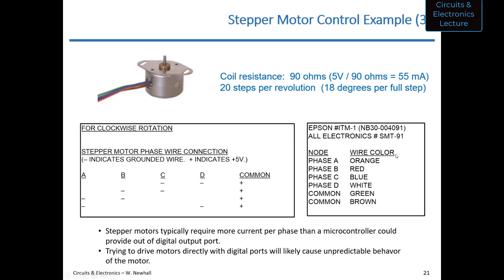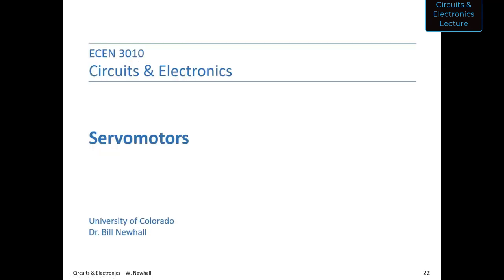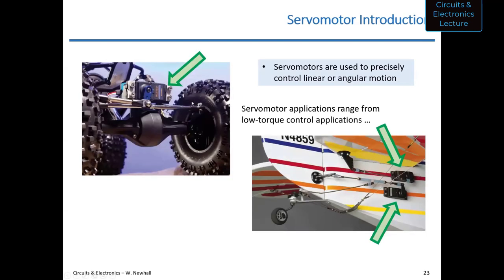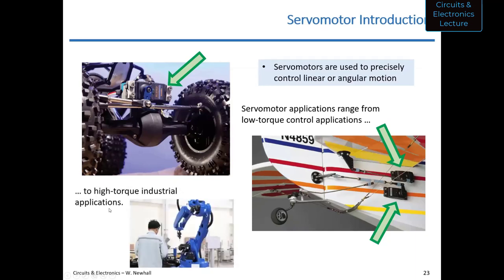There's another type of motor called a servo motor. Servo motors usually control either linear or angular motion very precisely. You might see these on RC cars or radio-controlled airplanes, controlling steering or control surfaces. They're also used in non-hobby, high-torque industrial applications — anywhere you need precise linear or angular motion.